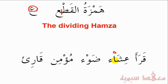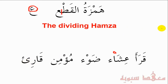In both of these cases: Isha' means 'the time of night when the light disappears,' and Dhaw means 'light.' Qara'a means 'He read.' Next we have the Hamza and before the Hamza is a Dhammah — when this happens the Hamza gets a Wao, so Mu'min means 'A Believer.' And finally, Qari' — before it is a Kasrah, and therefore it gets a Ya'.